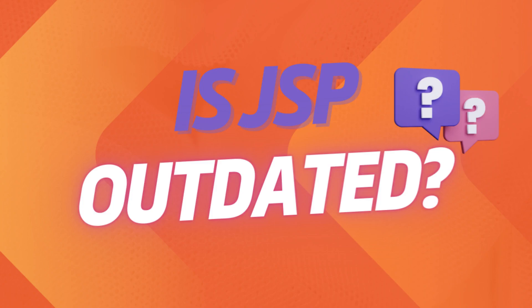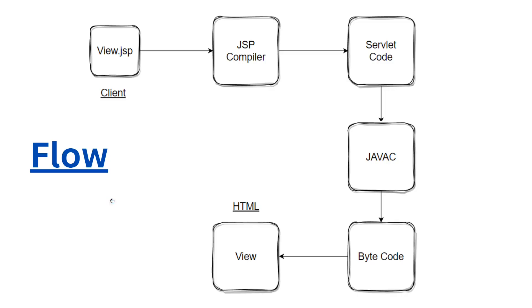So if you take a look here, we have a flow with JSP. On the client side, the client is going to trigger your application, and your application will trigger a JSP page — let's say view.jsp. That JSP page is first going to get compiled using the JSP compiler, which creates servlet code. That servlet code gets compiled again using the Java compiler, generating bytecode, and that bytecode is going to be your view in HTML format. This is your flow when we talk about JSP.